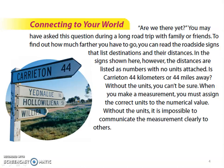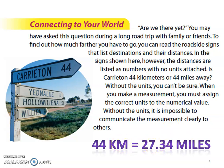Are we there yet? You may have asked this question during a long road trip with family or friends. To find out how much farther you have to go, you can read the road signs that list destinations and their distances. In the sign here, however, the distances are listed as numbers with no units attached. Is Carrieton 44 kilometers or 44 miles away? Well, I'm going to tell you right now, 44 kilometers is 27 miles. So there's going to be a big difference if we're 44 kilometers away or 44 miles away. So again, without units you cannot be sure. When you make a measurement, you must always assign the correct units to the numerical value. Because without these units, it's impossible to communicate the measurement clearly to others. So we've talked about that many times in science. It's not just the number, it is a number with the unit. And I want to remind you that the unit always comes after the number.